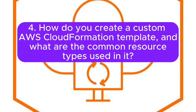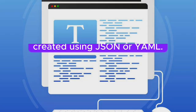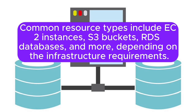Question 4: How do you create a custom AWS CloudFormation template, and what are the common resource types used in it? Answer: Custom templates are created using JSON or YAML. Common resource types include EC2 instances, S3 buckets, RDS databases, and more, depending on the infrastructure requirements.